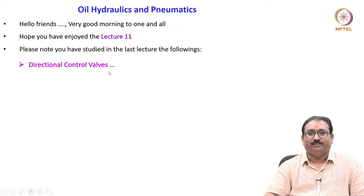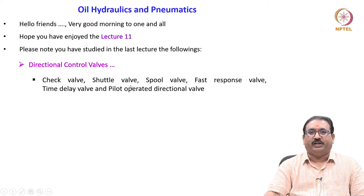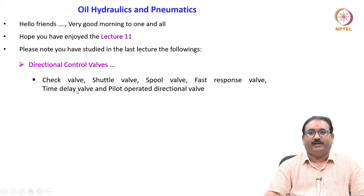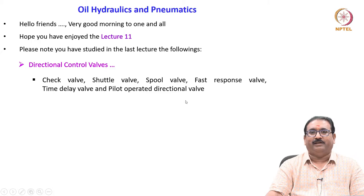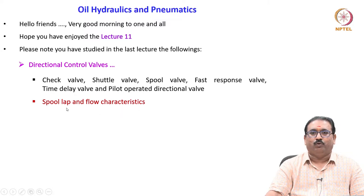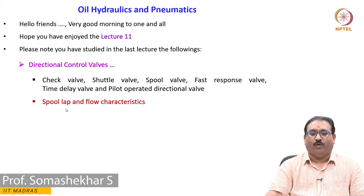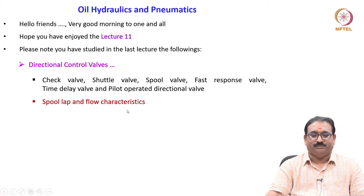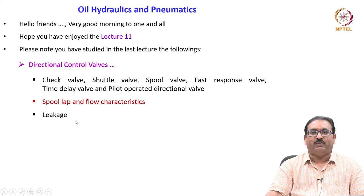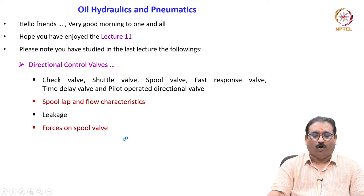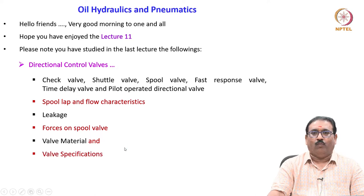Directional control valves — basically we studied check valve, shuttle valve, spool valve, fast response valve, time delay valve and pilot operated directional valves. Also, we have studied various types of spool lap, overlap, underlap, null cut valve and their flow characteristics. Also, we studied that leakage is one of the important phenomena in a spool valve — how to empirically derive the leakage flow in spool type valves. Also, we have studied forces on the spool valve, valve material and valve specifications.